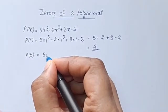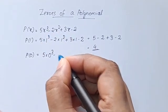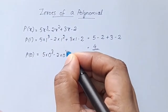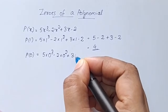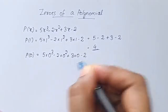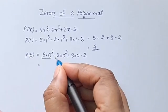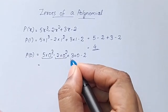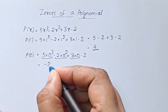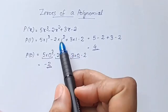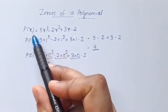Now substituting x equals 0: 5 into 0 squared plus 3 into 0 minus 2 is equal to negative 2.